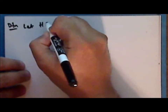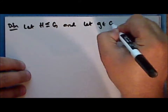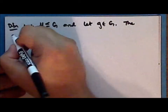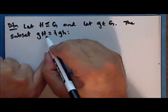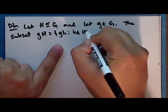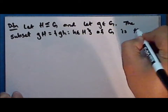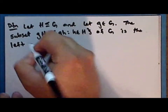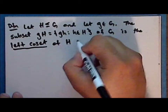New definition: let H be a subgroup of G and let g be an element in the group. The subset, which we denote as gH, which is the set obtained by multiplying each element in H on the left by g, is called the left coset of the subgroup H containing the element g.